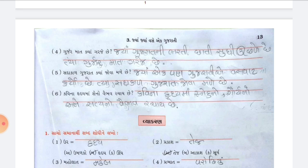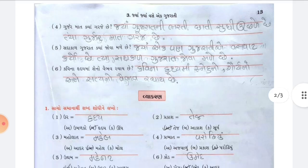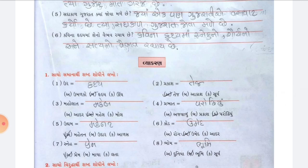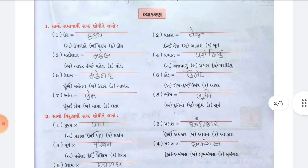Number 5: Sadhaakad Gujarat kyaa jova male chhe? Answer: Jyan ek pan Gujarati vasavat karyo chhe tyan sadhaakad Gujarat jova male chhe. Number 6: Kavina hrudayma sheno vaibhav rachay chhe? Answer: Kavina hrudayma Gujarat no vaibhav rachay chhe.